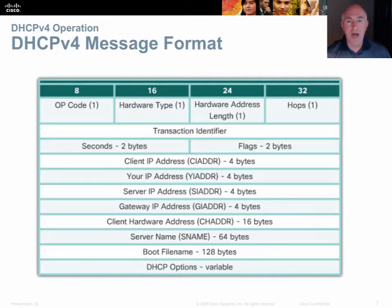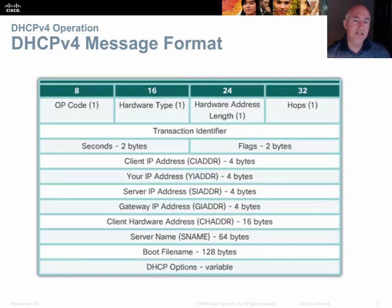This is the format of the header for a DHCP message — the information that can be packed in. There is quite a lot of information. What's really interesting is the last field, the DHCP options field, which is variable length. There are virtually an unlimited number of options that you can have with a DHCP message, which is pretty cool.